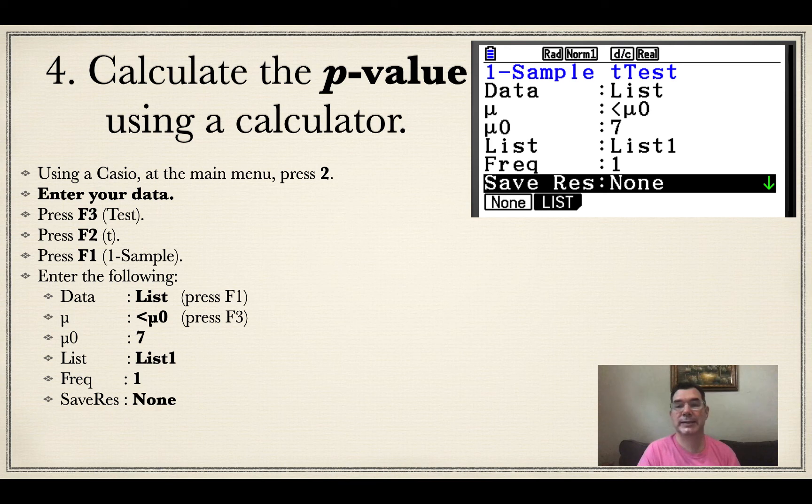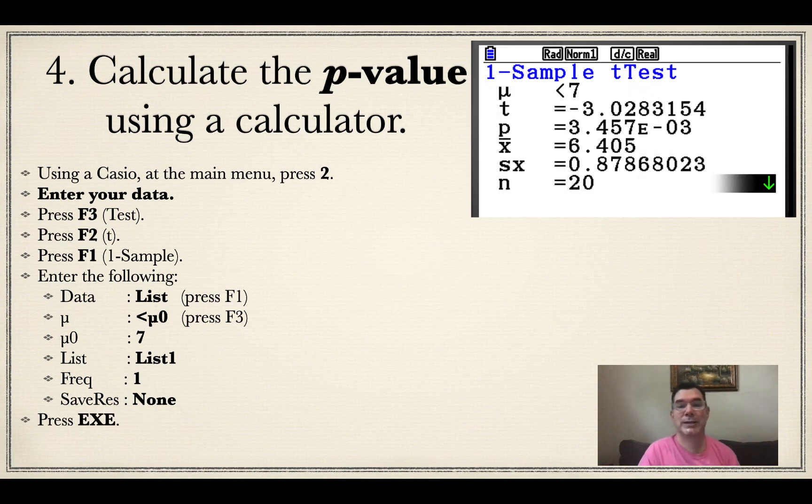Save res is none, and that's typically the default. There's everything entered in. The data is in a list, mu is less than mu zero, mu zero is seven, the list of data is list one, the frequency of each item in that list is just one, and save res is none. Now I press exe.